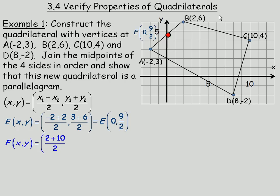Next we will call F the midpoint of BC, so we would add 2 and 10 and divide by 2. Also 6 and 4 and divide by 2. So F has coordinates (6,5).